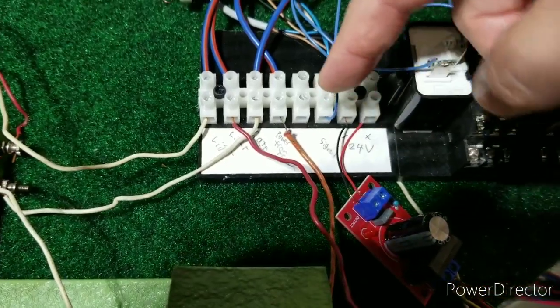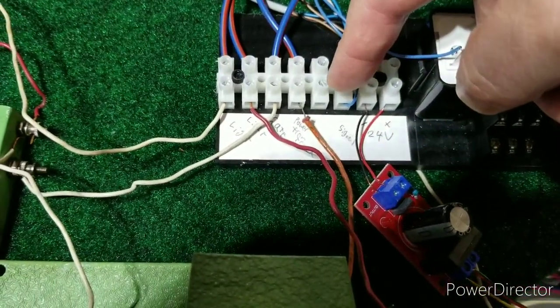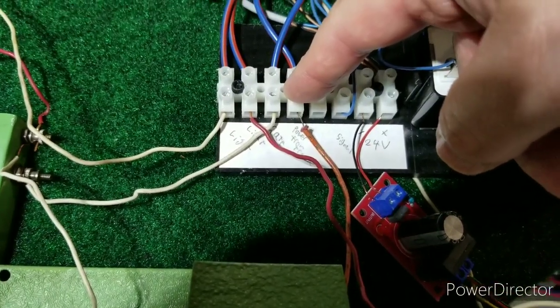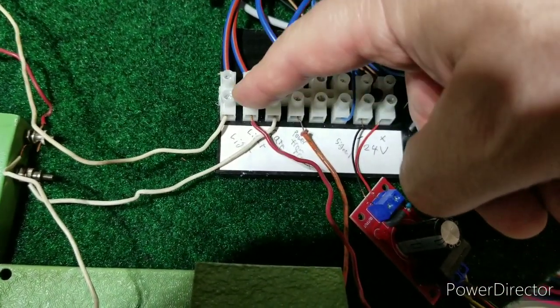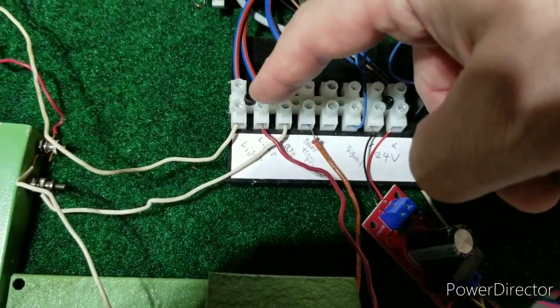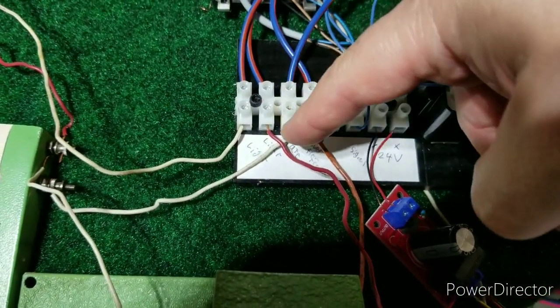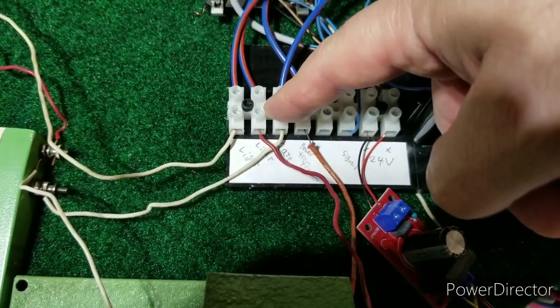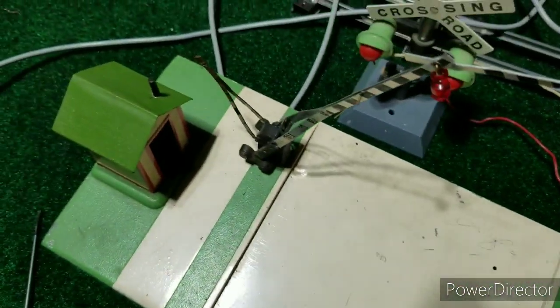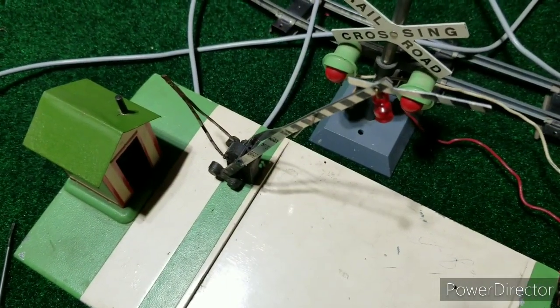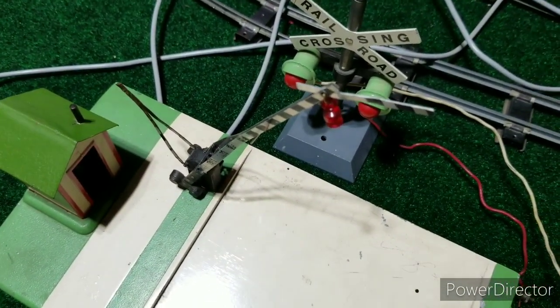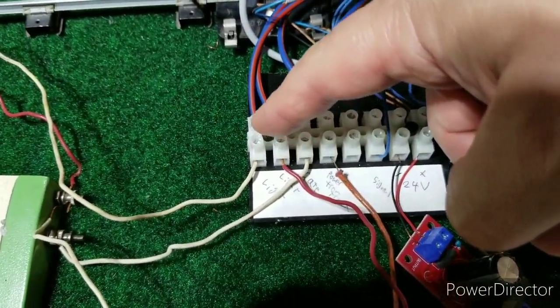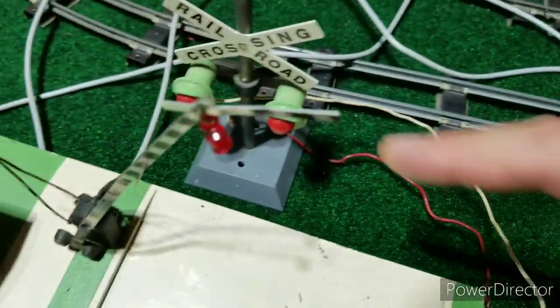And then here is a terminal strip where I have power from my track or transformer in this case. And then I have a gate, a light, and another light. Basically the point is the power when the system is activated, the power to the gate is constant. In this case, this gate has a solenoid in it and it needs to be powered or else the gate doesn't go down or stay down, I should say. So that's where that power needs to stay on.